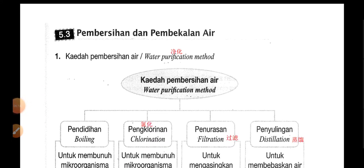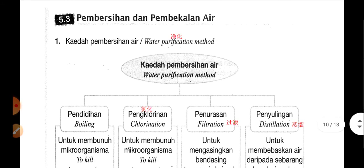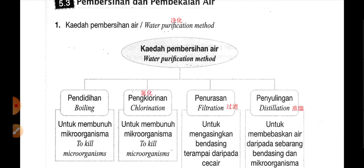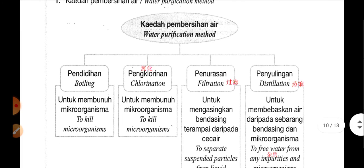好，下一个，到5.3，purification，水的净化方法。Purification 就是精化的意思，因为水好像河水不可能拿上来就喝的嘛，对不对，那河水这样肮脏所以我们需要经过一些过程，那个过程叫 purification，就是把它弄干净。Method 就是方法，下面有四种不一样的 water purification method。